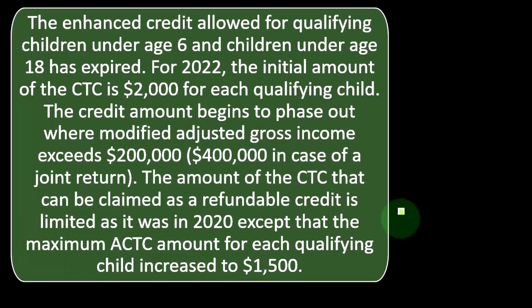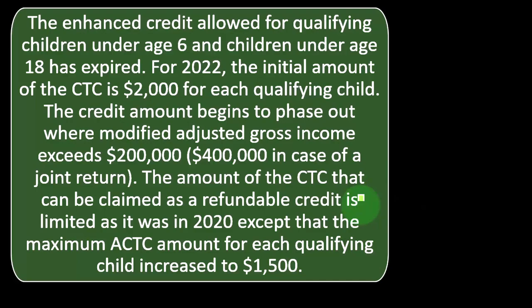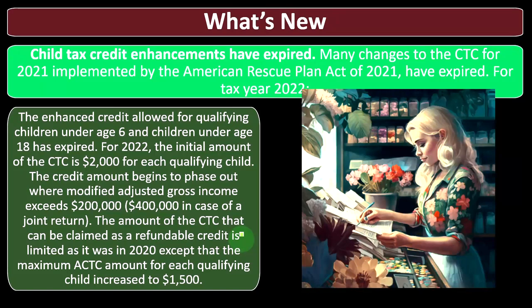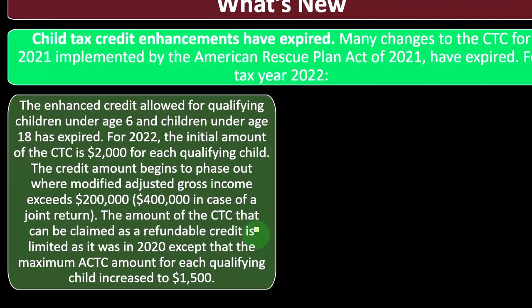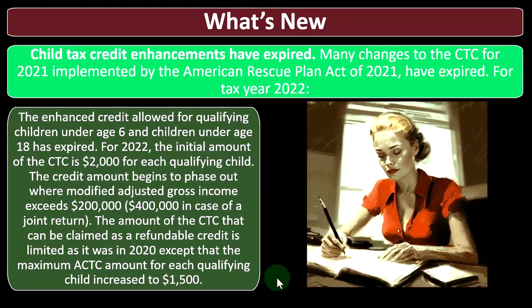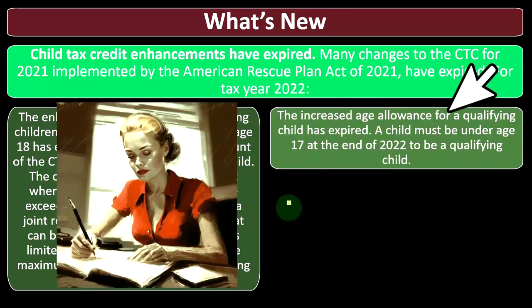The amount of the CTC that can be claimed as a refundable credit — meaning you still get a benefit even if your tax liability is zero — is limited as it was in 2020, except that the maximum ACTC (additional child tax credit) amount for each qualifying child increased to $1,500. The increased age allowance for a qualifying child has also expired. A child must be under age 17 at the end of 2022 to be a qualifying child.